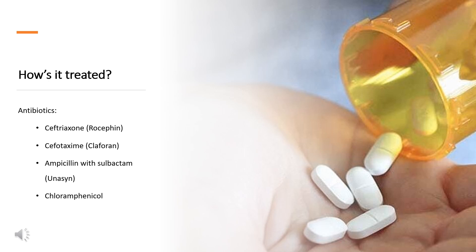Cefotaxime (Claforan) is another third-generation cephalosporin antibiotic with the same mechanism of action as ceftriaxone. For uncomplicated cases: 1 g IV or IM Q12H. For moderate to severe cases: 1 to 2 g IV or IM Q8H. For more serious bloodstream infection or septicemia: 2 g IV Q6-8H.